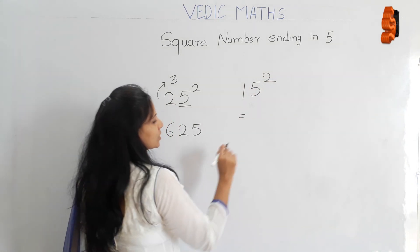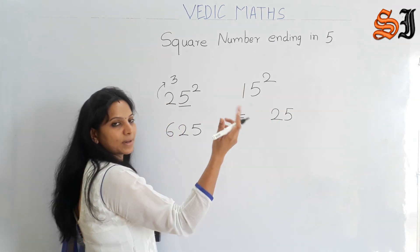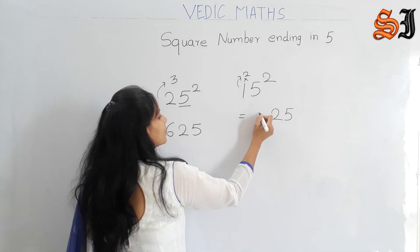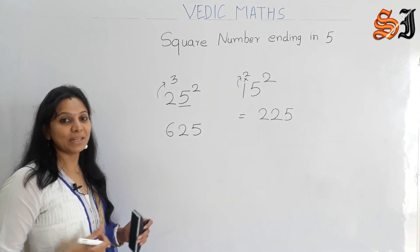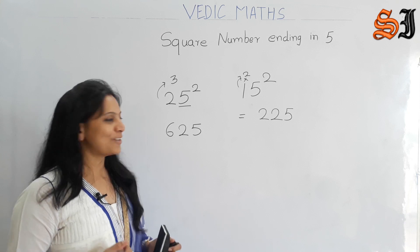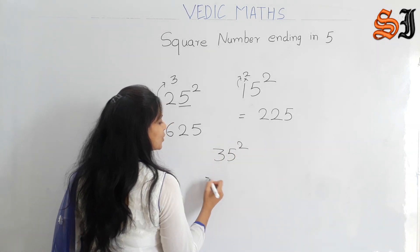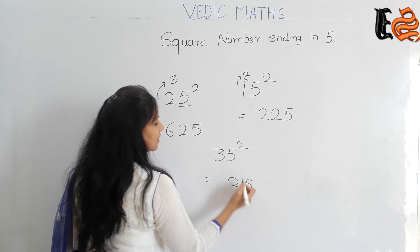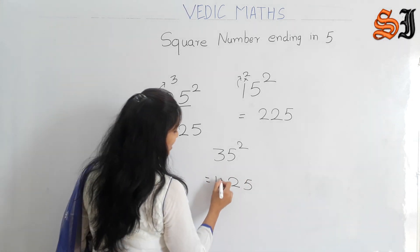For 35 squared: 5 squared is 25, then the first number is 3, and the next number is 4. So 3 into 4 is 12, giving us 1225.